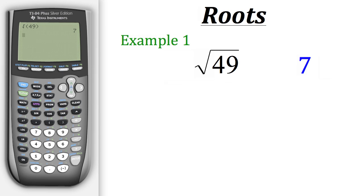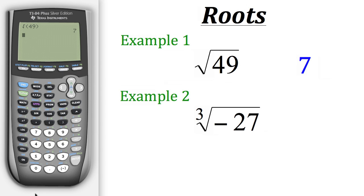Now let's find out how we could evaluate a different root — for example, a cubed root. So here we have the cubed root of negative 27. In order to do that, we can't use the same square root symbol we did before. But what we can do is go to Math, and if you see here, the fourth option is a cubed root.